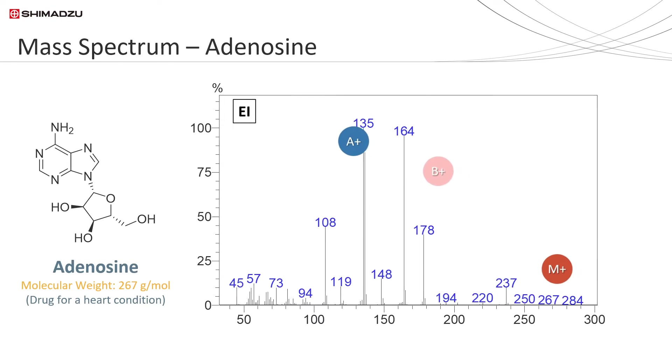Electron ionization in MS produces a mass fingerprint which we call a mass spectrum. This fingerprint is unique to the compound. For example, the mass spectrum shown here is unique to adenosine using electron ionization.